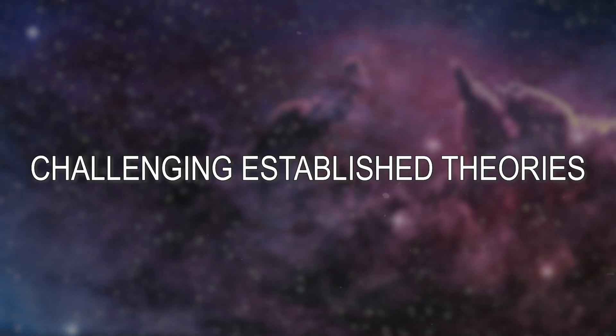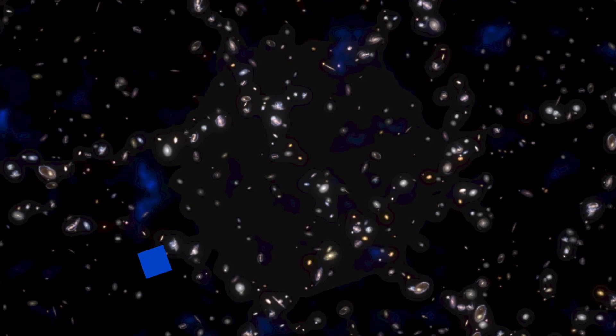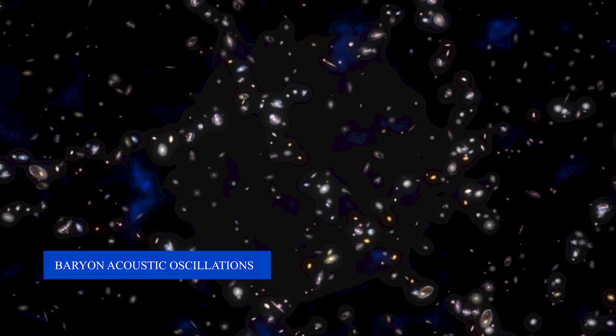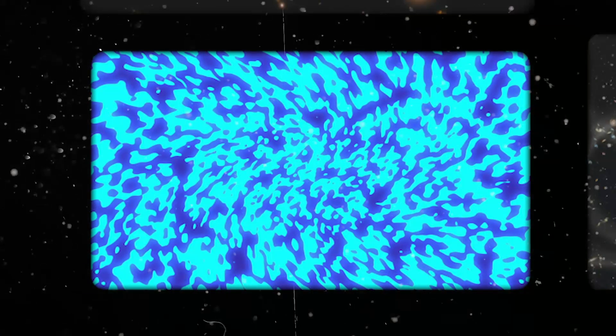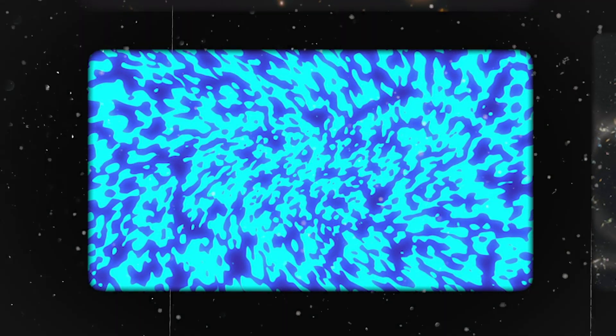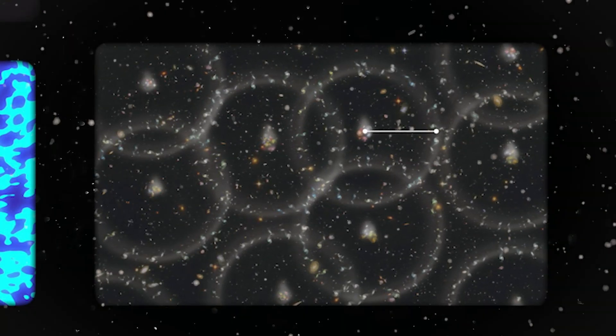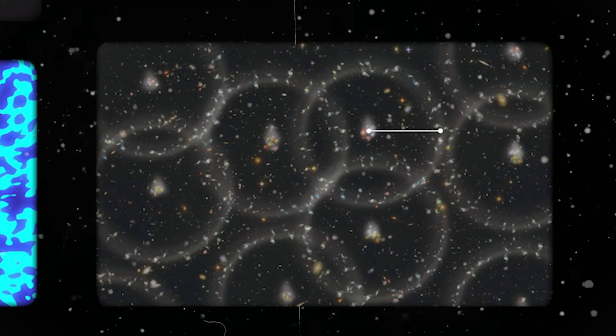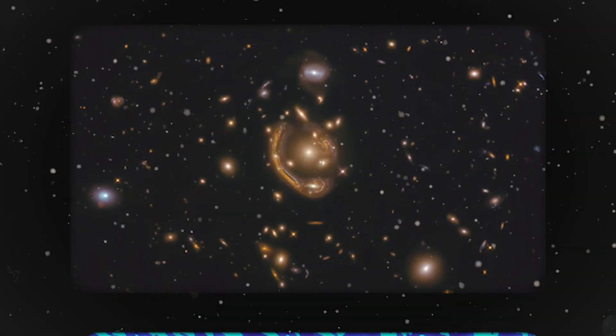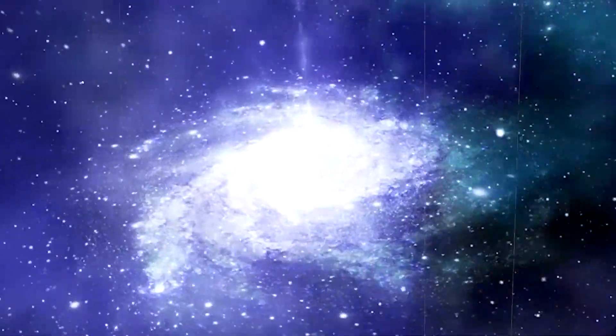Challenging established theories: one of the primary contenders for explaining the Big Ring's origin is the Baryon Acoustic Oscillation – BAO theory. BAOs are large-scale ripples in the fabric of space-time, leftover echoes from the Big Bang. These ripples manifest as subtle variations in the distribution of galaxies, forming faint, spherical patterns. However, the Big Ring doesn't quite fit the BAO mold. Its size is slightly larger than typical BAOs, and its elongated shape deviates from the expected spherical symmetry.